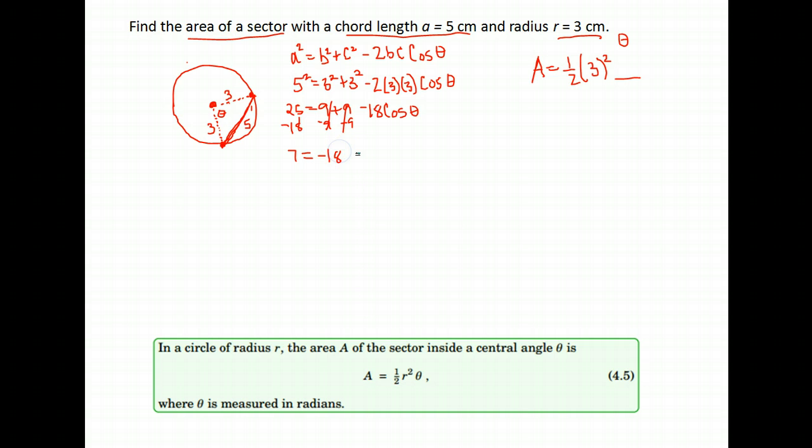7 equals negative 18 cosine theta. Divided both sides by negative 18, and you will be doing a lot of this in this lesson, finding angles using the law of cosines.